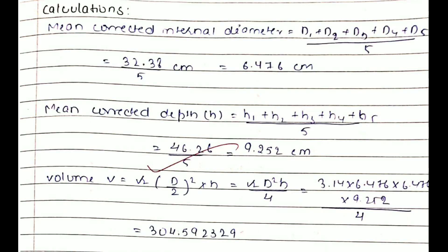Then there comes a calculation of volume by using the formula π d squared h upon 4. After the whole calculation you get the answer as 304.592329 centimeter cube, and you can round it off to 304.6.